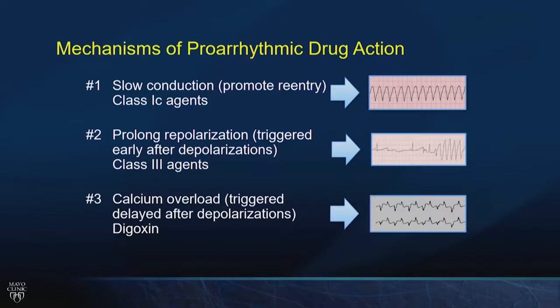The third mechanism of proarrhythmia is calcium overload — triggered delayed after depolarizations — which you heard about with CPVT. High intracellular calcium increases automaticity; this can cause an alternating bundle branch block pattern or bidirectional ventricular tachycardia. The treatments are opposite: for proarrhythmia related to long QT, you may want to pace the heart fast to shorten the QT interval. Whereas in CPVT, loading the heart with additional calcium will precipitate VT storm — which is why we're so cautious placing ICDs in that population.